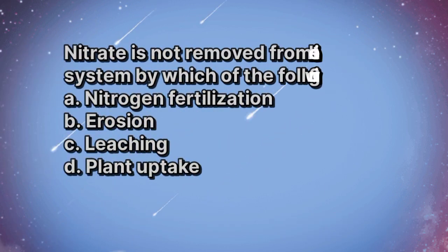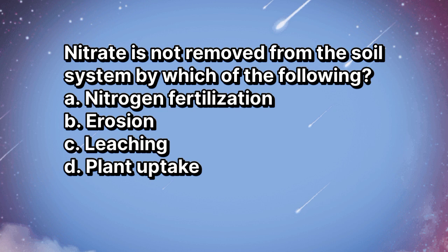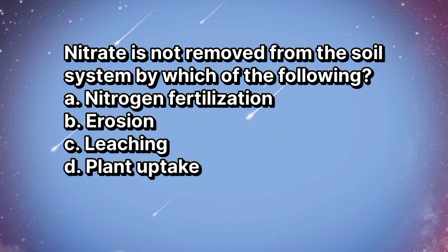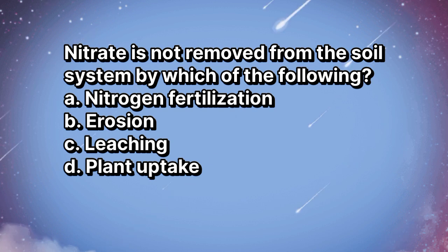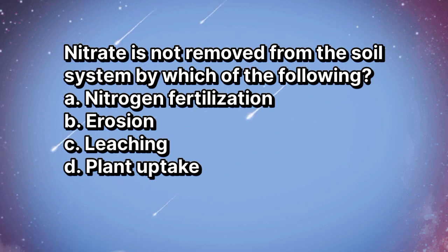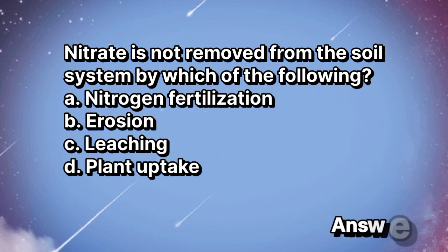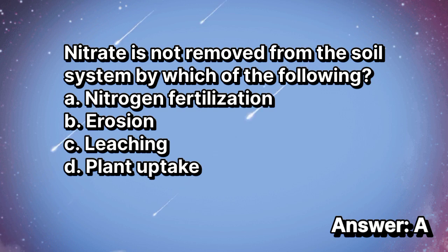Nitrate is not removed from the soil system by which of the following? A. Nitrogen fertilization. B. Erosion. C. Leaching. D. Plant uptake. The answer is letter A.